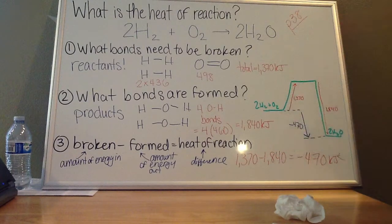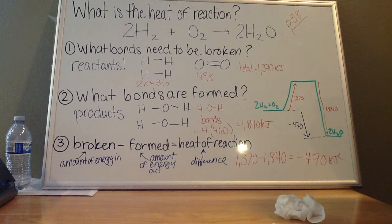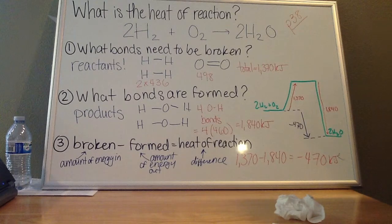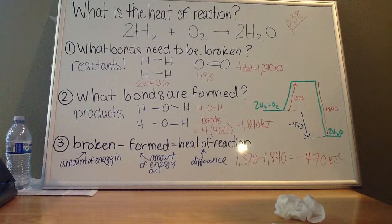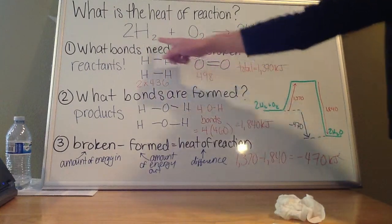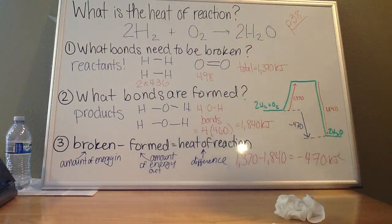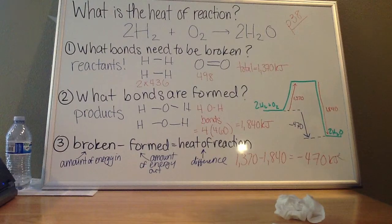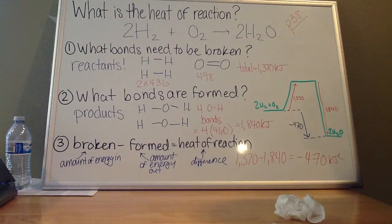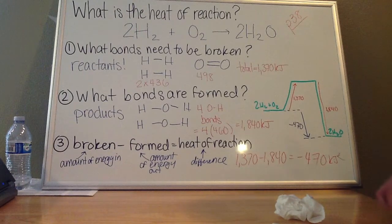So the steps you want to take when you're trying to find the heat of reaction is first, ask yourself what bonds need to be broken. So in order to form products, you first are going to have to break the bonds of your reactants. So I'm going to look over here on the left-hand side of the arrow and say, what are my reactants and how much energy does it take to break those bonds? It will help to draw the structural formula of these molecules so you can figure out what bonds you're actually breaking.